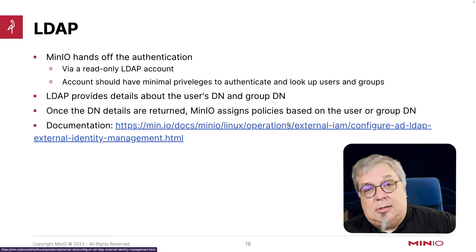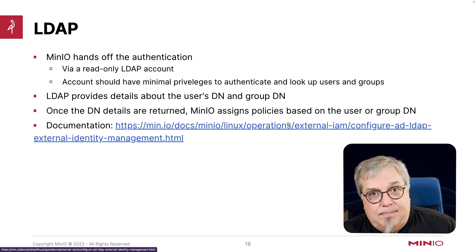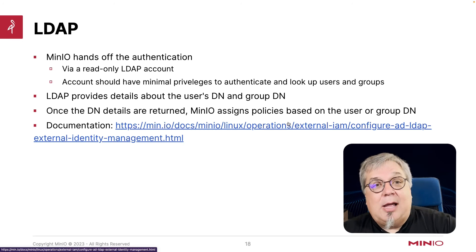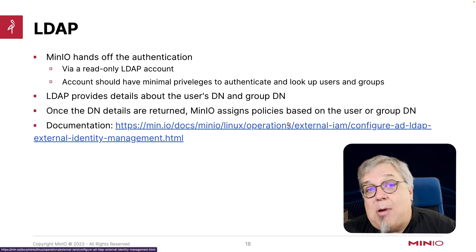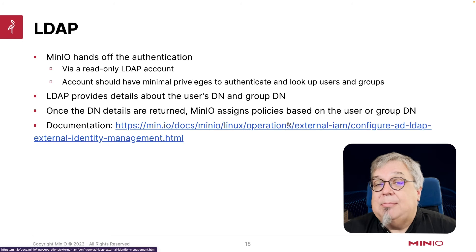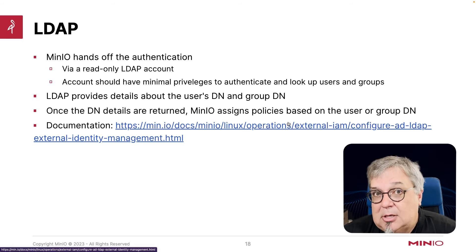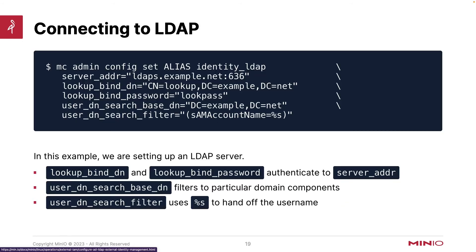In OpenID, remember, OpenID will hand a policy list and MinIO will attempt to map them — so it's a little different.